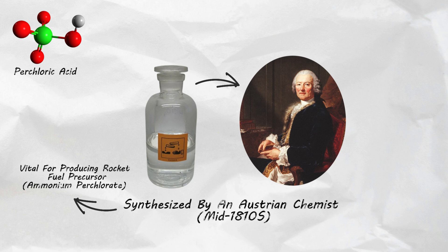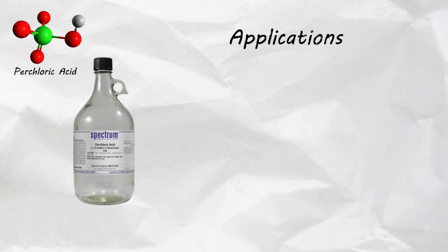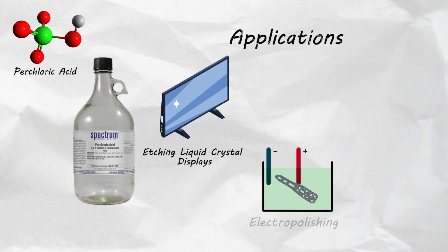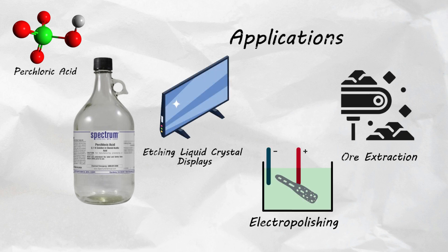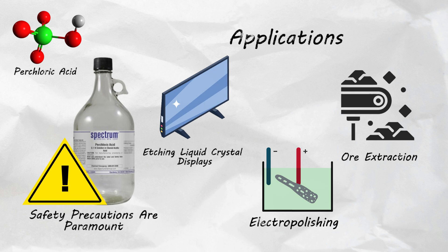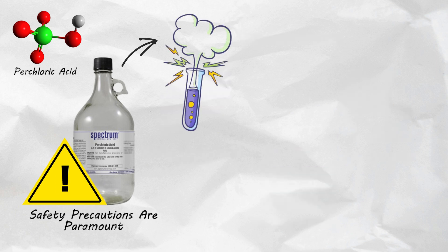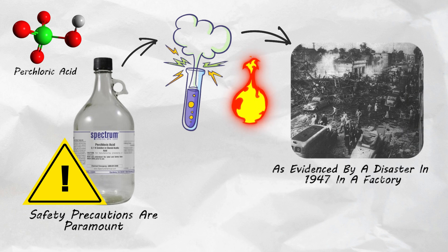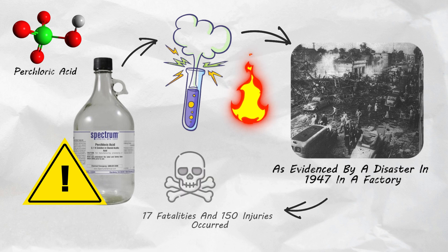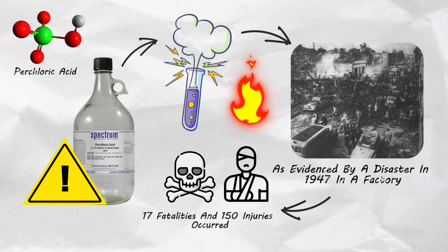Initially synthesized by an Austrian chemist in the mid-1800s, it has become a vital component in producing a precursor for rocket fuel. Its application extends to etching liquid crystal displays, electropolishing and ore extraction. Safety precautions are paramount due to its violent reactions with metals and flammable substances, as evidenced by a disaster in 1947 in a factory where 17 fatalities and 150 injuries occurred due to an explosion involving perchloric acid.